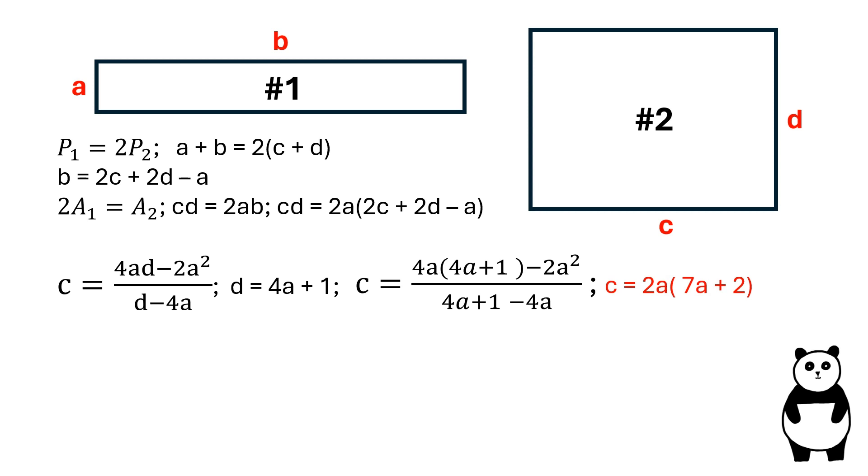Now let's substitute the value of C and D into this equation and solve for B. B is equal to 2 times the sum of 7A and 2, times the sum of 4A and 1, minus A.